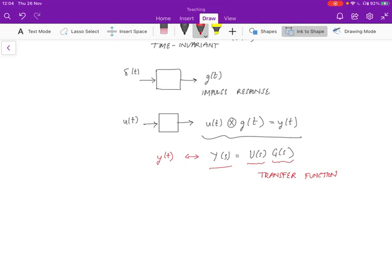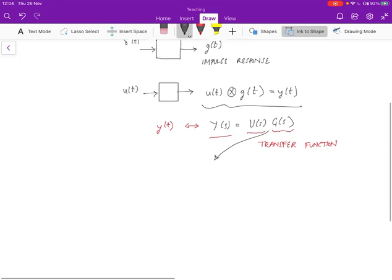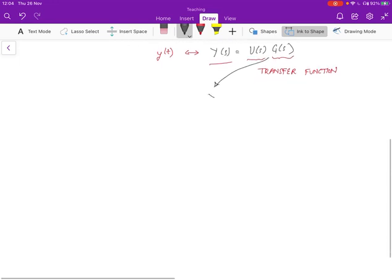While studying this, it's very important to realize that g of s has a particular form that is useful to understand. This transfer function g of s could of course be arbitrary, but in many cases is of the form n of s over d of s, where n and d stand for numerator and denominator. These values are both polynomials in s.